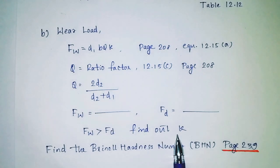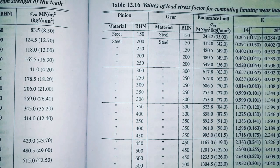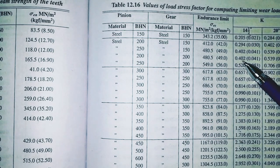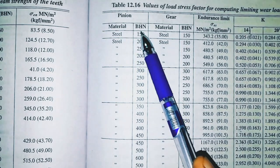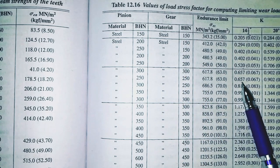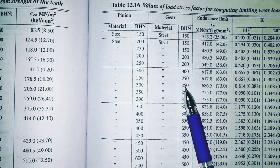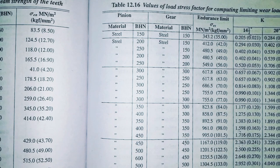We will find out the k value and then find out the Brinell hardness number, BHN. Page number 239. You need to find the BHN for the pinion and the BHN for the gear.